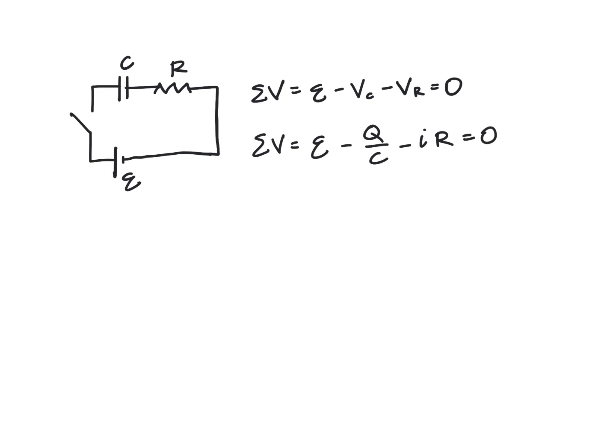If we substitute in instead of Q, let's call this some variable amount of charge, and then current would be DQ DT because the current is the rate at which the charge moves, times R equals zero.